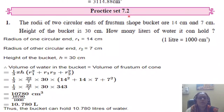Your practice set 7.2, first question. The radii of two circular ends of a frustum shape bucket are 14 cm and 7 cm. Height of the bucket is 30 cm. How many liters of water it can hold?